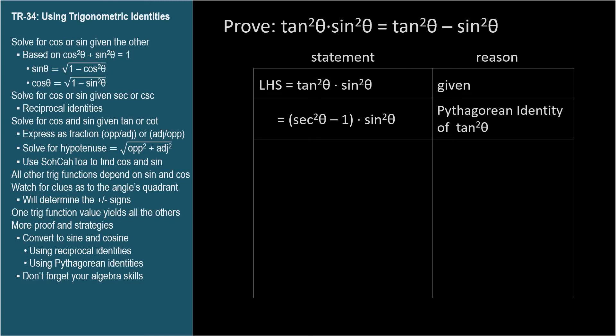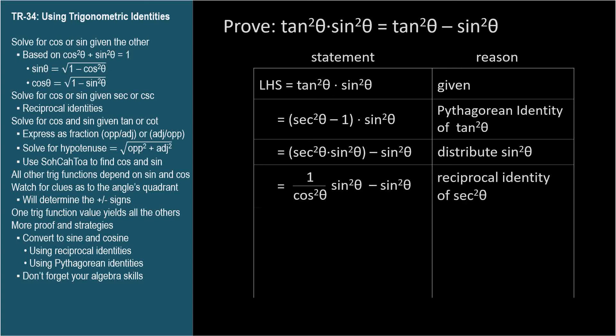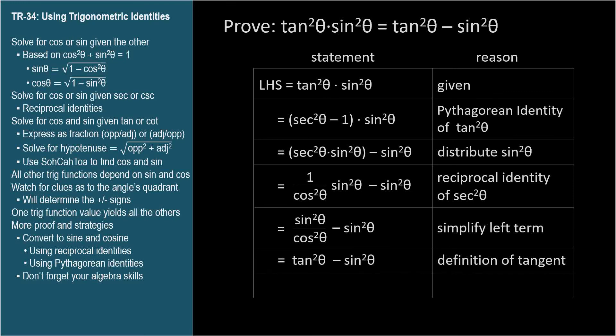So we have secant squared theta minus 1, all times sine squared theta. We can distribute the sine squared theta to each term in parenthesis to get sine squared theta times secant squared theta minus sine squared theta. Let's replace secant squared theta with its reciprocal identity, 1 over cosine squared theta. This all simplifies to tangent squared theta minus sine squared theta, which is the right-hand side of the identity we were asked to prove.